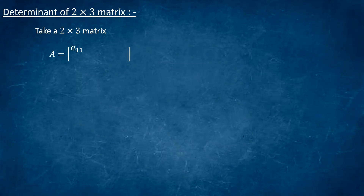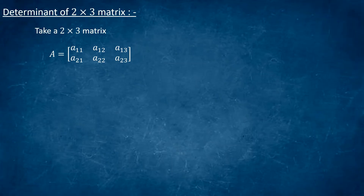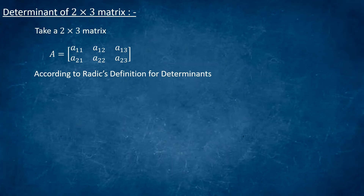A is equal to [a11, a12, a13; a21, a22, a23]. We will apply Roddick's definition for the determinants of non-square matrices. So we proceed according to Roddick's definition for the determinants of non-square matrices.